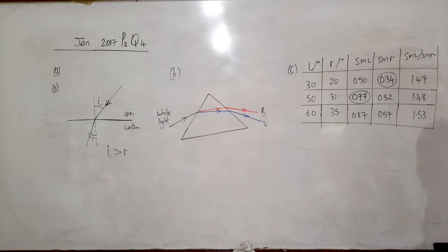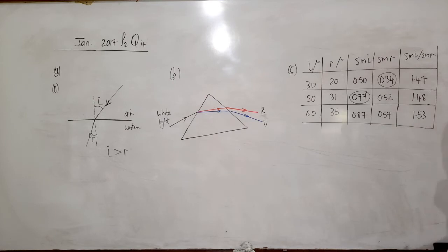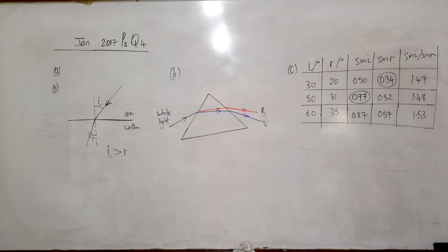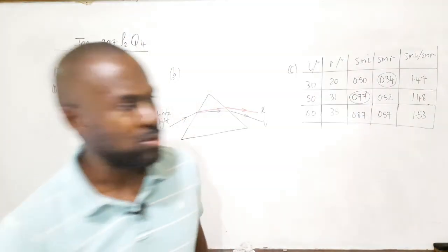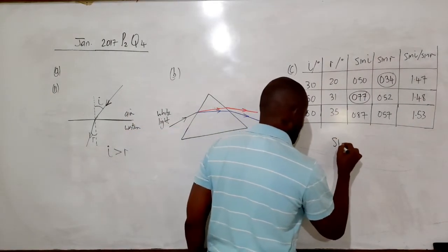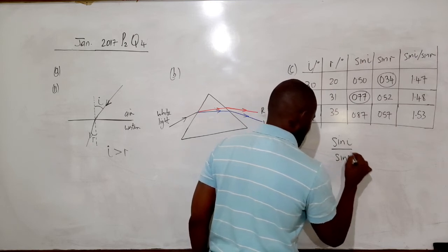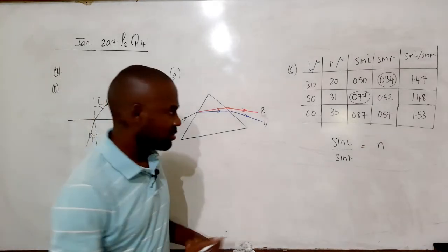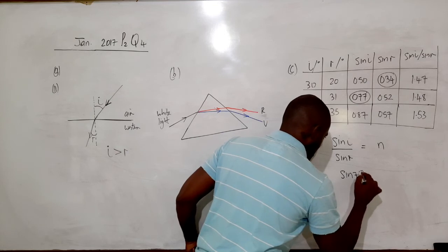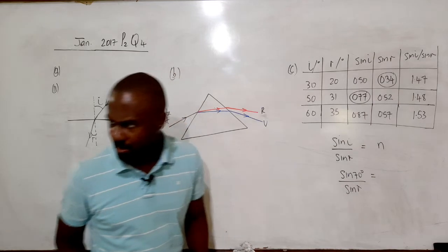Having completed the table, the next part asks: determine the angle of refraction if an angle of incidence of 70° was recorded, using the refractive index of glass as 1.52. According to Snell's law, the ratio sine i over sine r equals the refractive index n. So sine 70° divided by sine r equals 1.52.